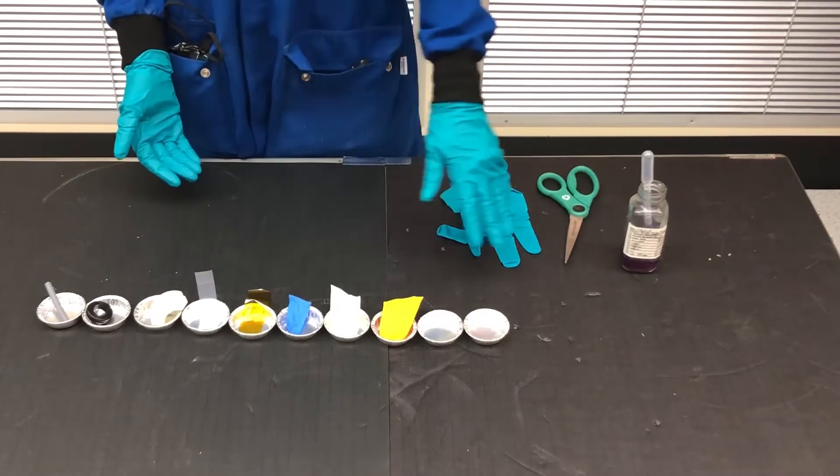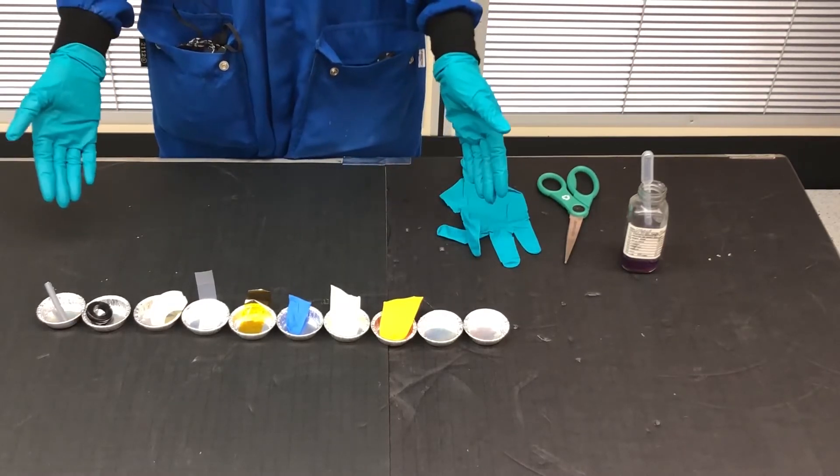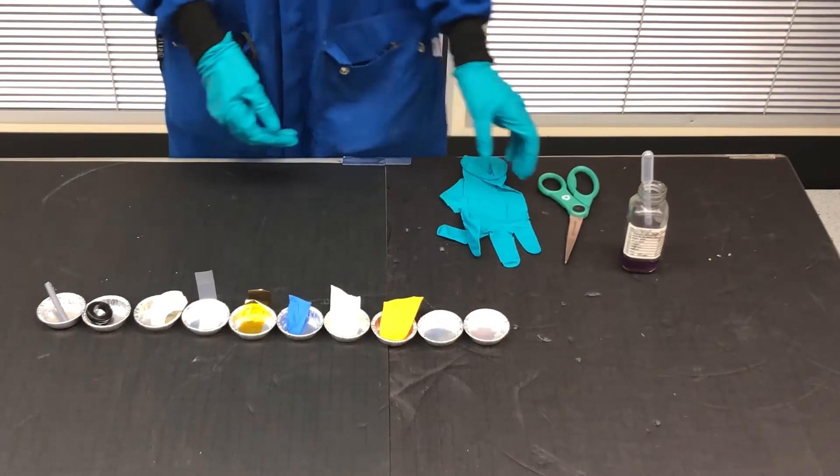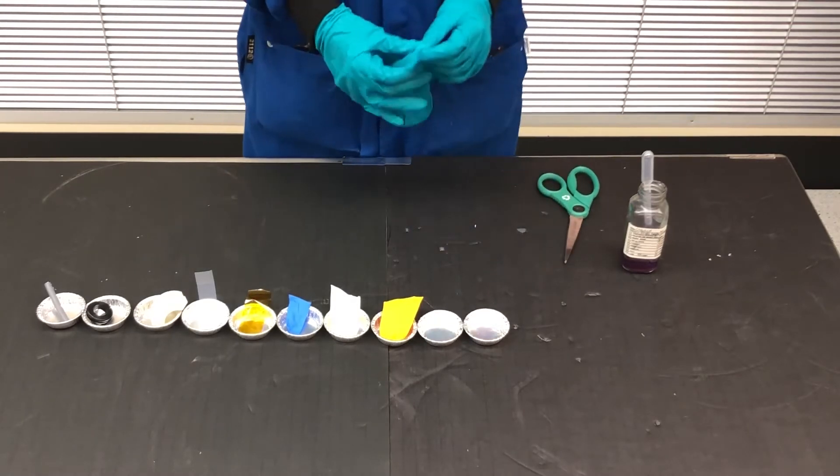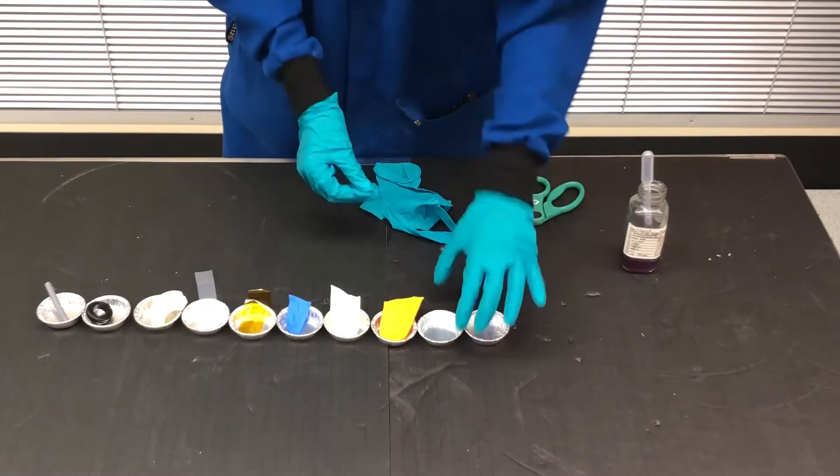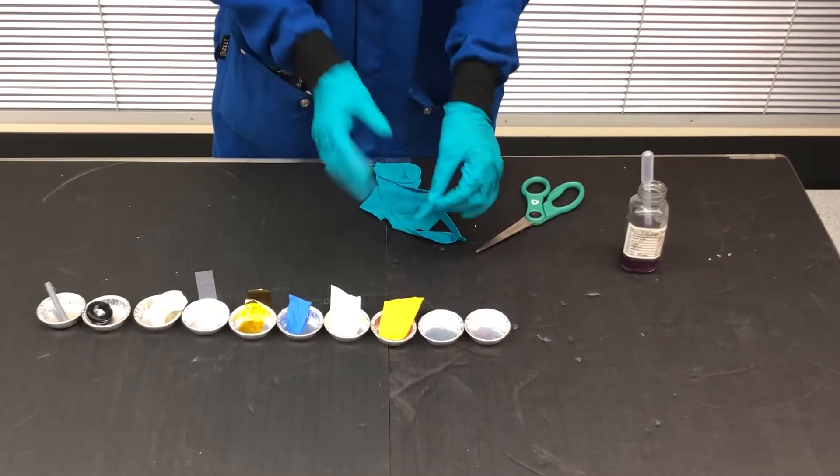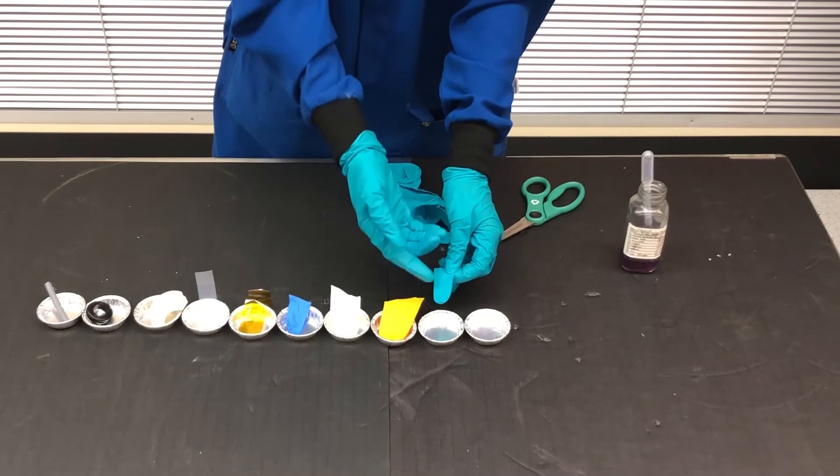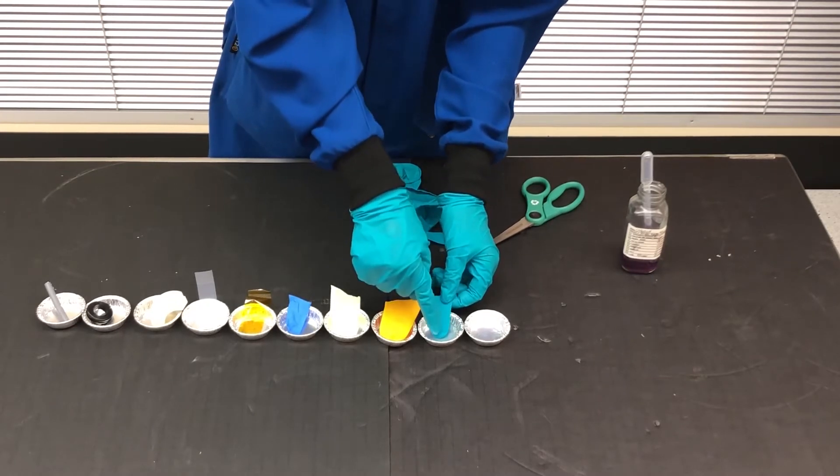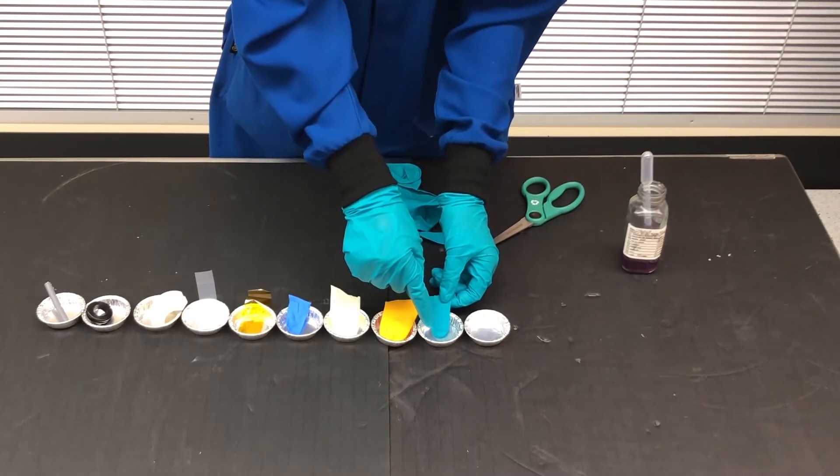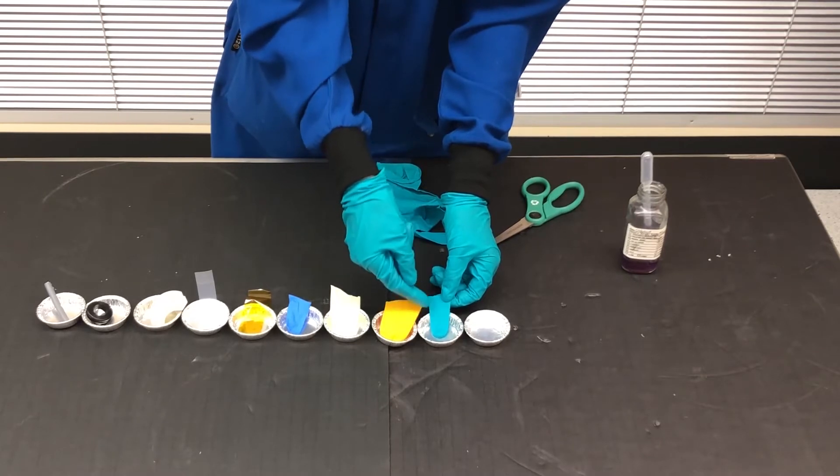Once all the potential sources of contamination are found, prep your sample for testing by using scissors and cut off a small portion. Then place the small sample of material into a small metal dish as it does not have to use much material. Place the small sample so that it's touching the bottom of the tin, but that there is a portion that is still overhanging and exposed.